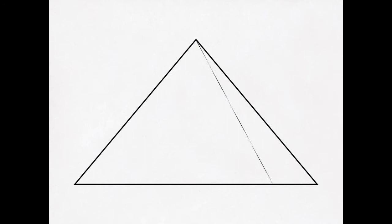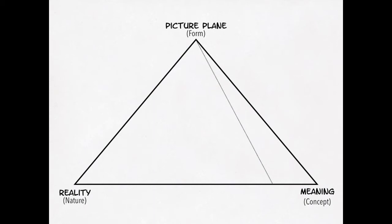What are these three forces, or poles, on visual art? On one corner, we have reality — the attempt to show nature. We have meaning, which is the attempt to show a concept. And we have the picture plane, which is an attempt to show form.